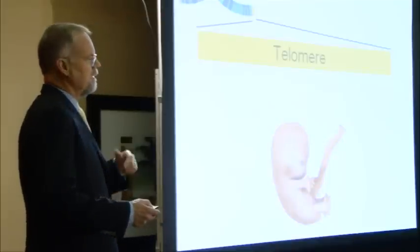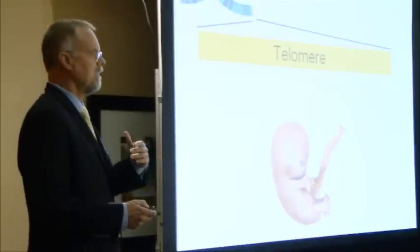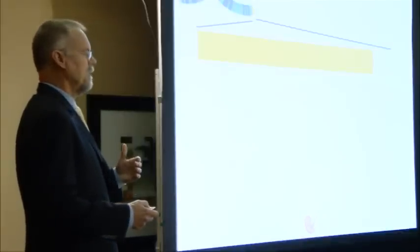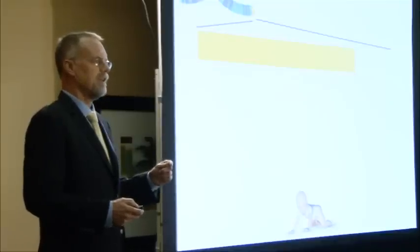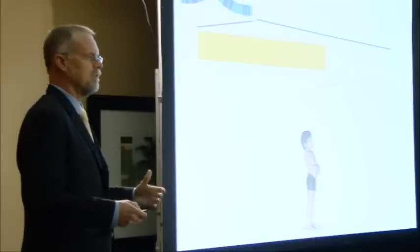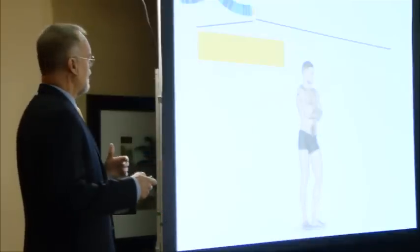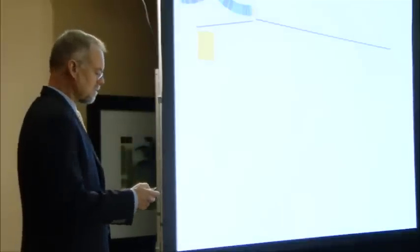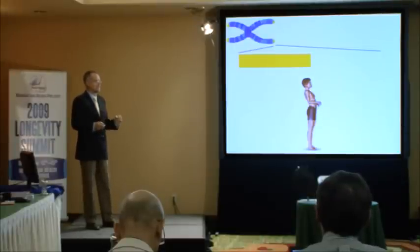After we are conceived and our cells start to divide, our telomeres start to shorten. When we become a newborn baby, our telomeres have already shortened by 5,000 bases — it started at 15,000 bases and has dropped to 10,000 bases. As we continue to grow and develop into an adult, we have more cell division, and our telomeres shorten even further. When the telomeres get down to about 5,000 bases, we essentially die of old age. So: conceived at 15,000 bases, born at 10,000 bases, die of old age at 5,000 bases.